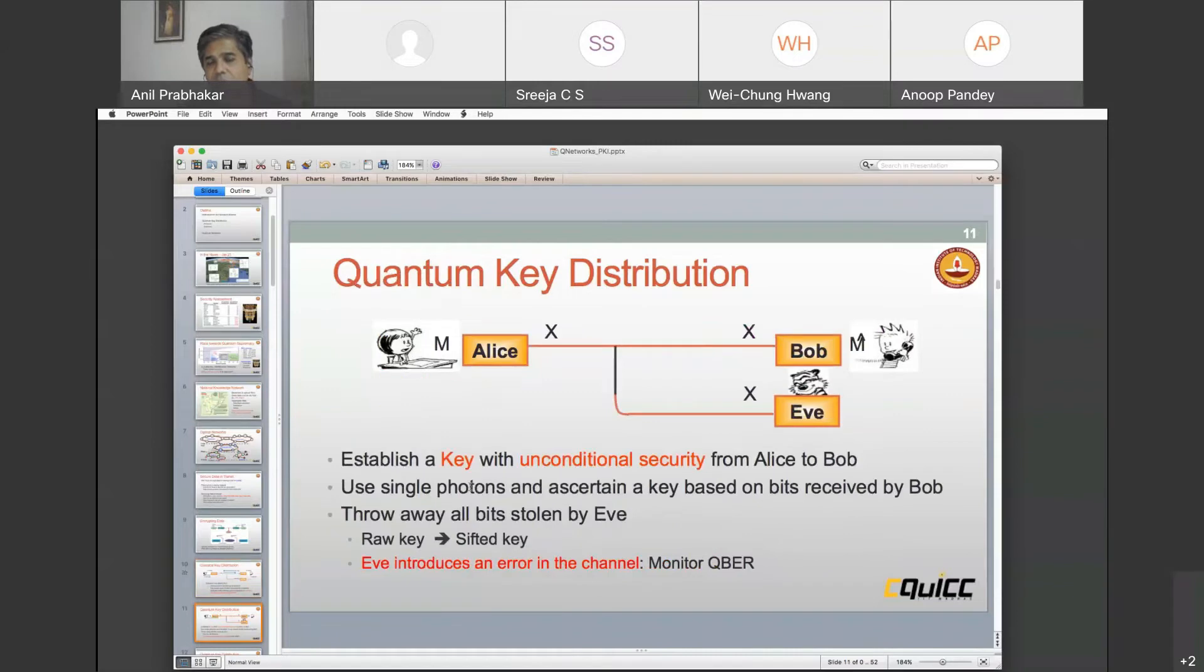How do we do this in quantum key distribution? We say that we will establish a key with unconditional security from Alice to Bob. That means even if the eavesdropper gets some information, we will still have a secure key that can be used. That key can then be used for encryption and creating the ciphertext.